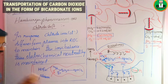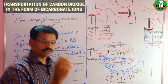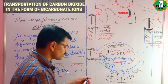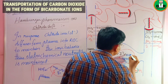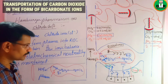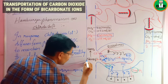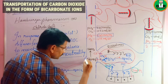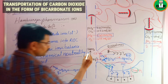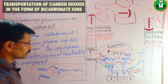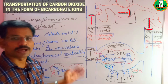The chloride ions that enter the RBC through special protein transporters react with potassium to form potassium chloride (KCl). Meanwhile, the HCO₃⁻ ions that diffuse out of the RBC react with sodium in the plasma to form sodium bicarbonate (NaHCO₃). These sodium bicarbonates are then transported through the venous system to the lungs, where the next stage of the process occurs.